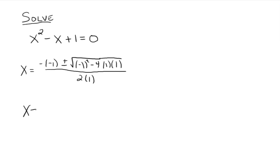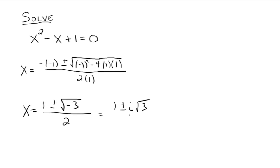So x equals 1 plus or minus the square root of negative 3, all over 2, which goes to 1 plus or minus i radical 3 over 2, which we can write as 1 half plus or minus the square root of 3 over 2 times i. That's the formal a plus bi form that we typically write complex numbers in.